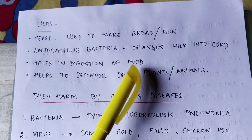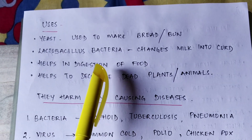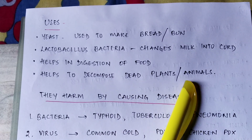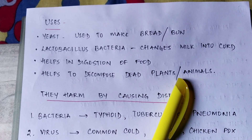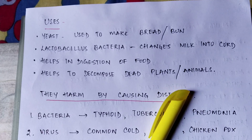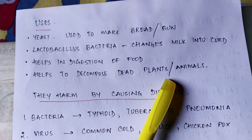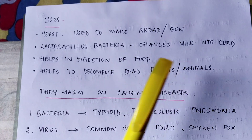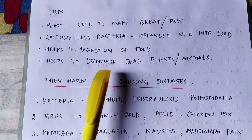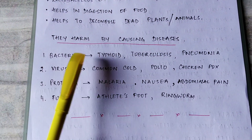Microbes help in the digestion of food and they also help to decompose dead plants and animals. If dead plants and animals were not decomposed, the environment would be in very bad condition. So microbes help keep the environment clean and safe.